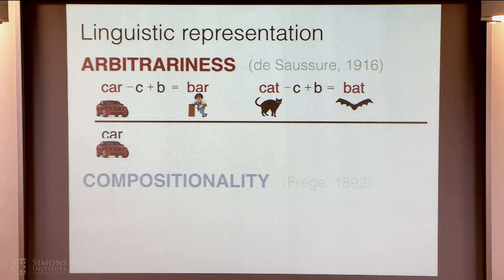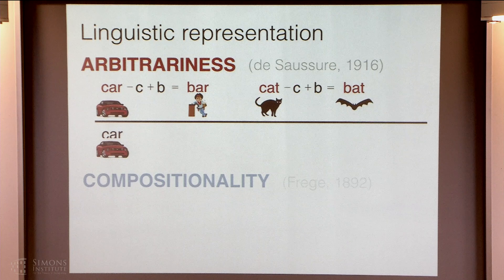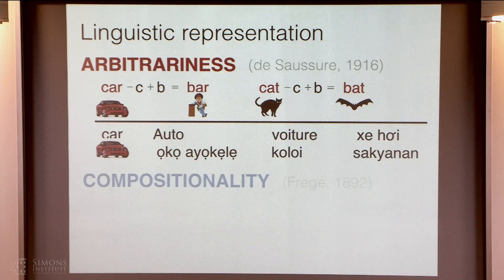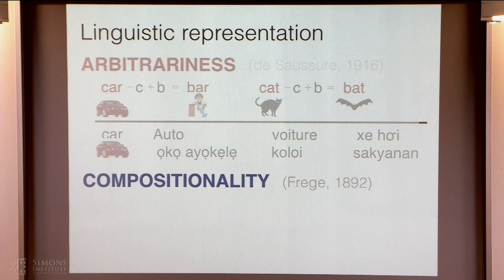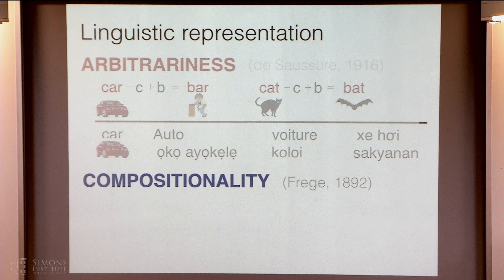Another way we see arbitrariness is if we look across languages. Take a concept like 'car,' which is historically relatively recent. We might think it was invented once and everybody got the same word, but we look at a bunch of different languages and find they all picked a completely different word for it. Even when there would be a historical reason to have some relation between these words, we don't see it. At the other end of the spectrum, we've got compositionality — the idea that you can look at the meaning of an expression as a composition of the meanings of its component parts and the rules used to put them together.